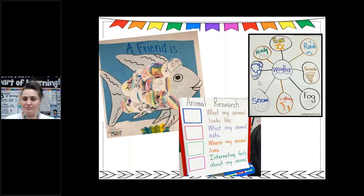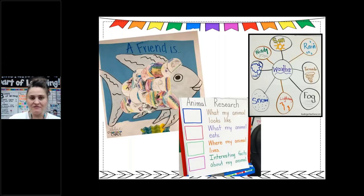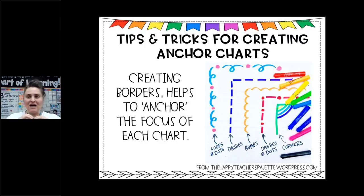Someone asked earlier about graphic organizers — circle maps, webs — those are all basically anchor charts and you can combine them with graphic organizers. For animal research, I showed students what the format would look like since they were going to work with third-grade partners, so they could always refer back to the expectation. Here are some tips and tricks: always try to create a border because it helps anchor and focus the chart — especially when you have four or five charts on your walls, you want each to be its own specific chart, not blending into a big mural.